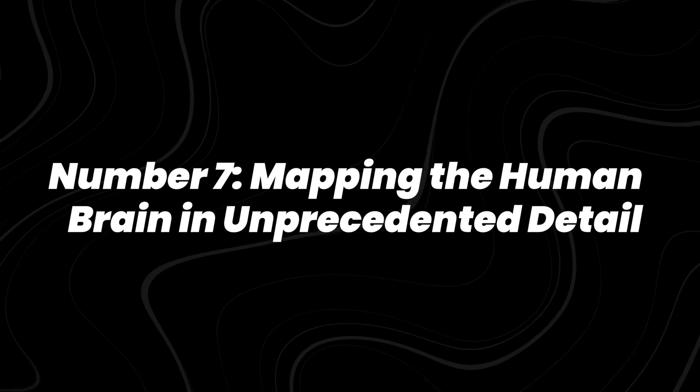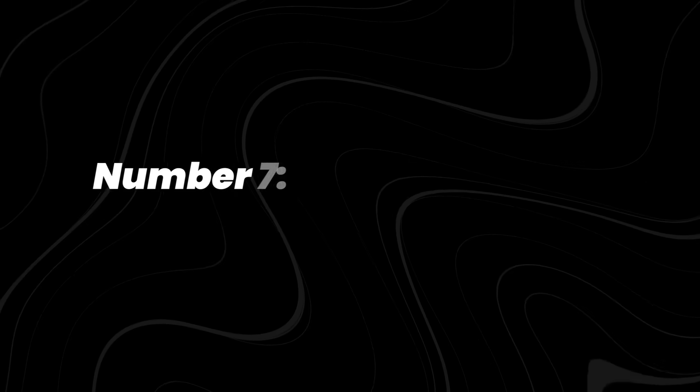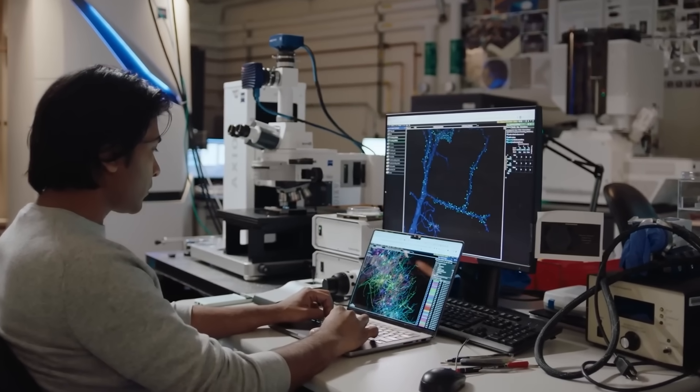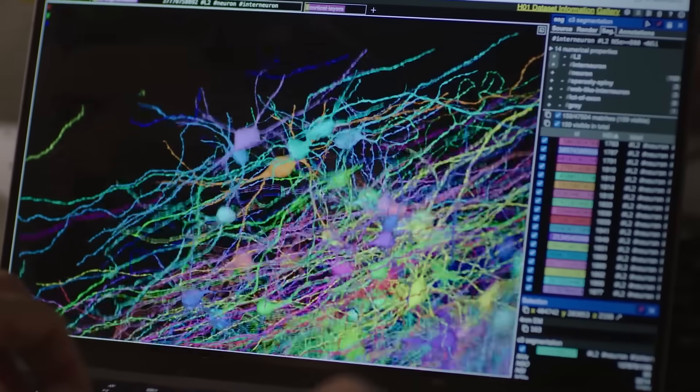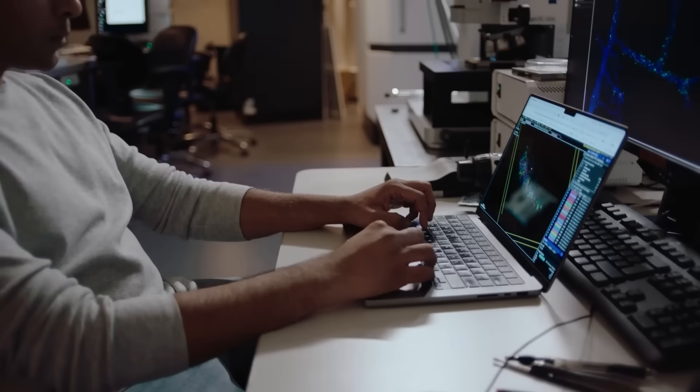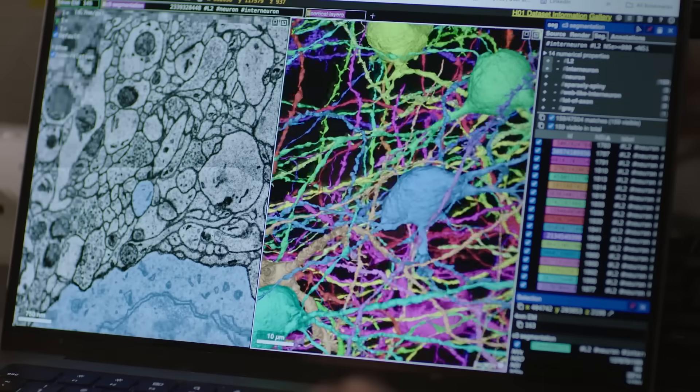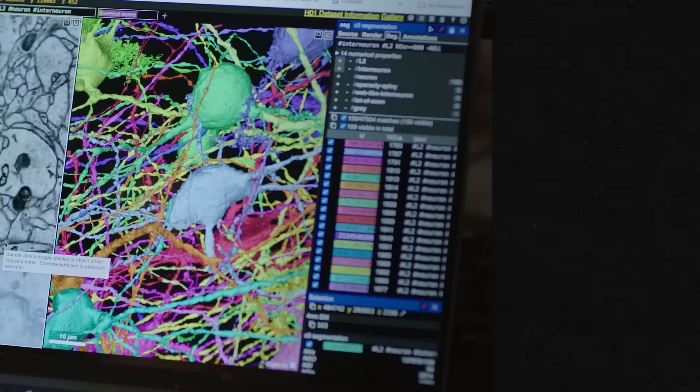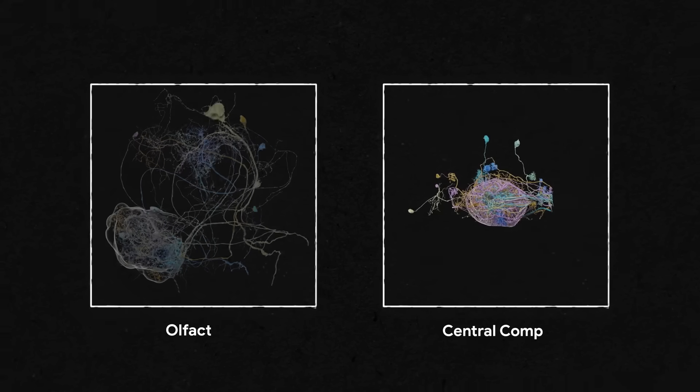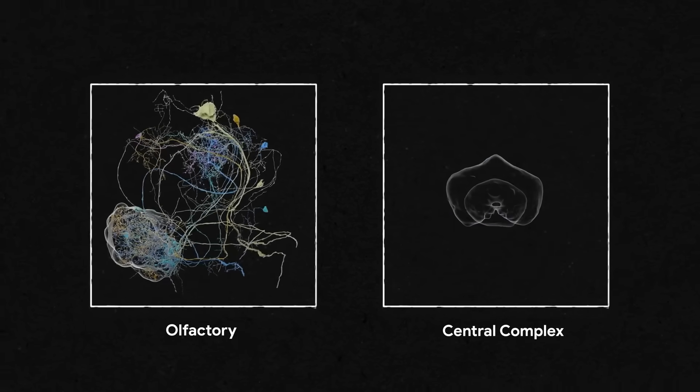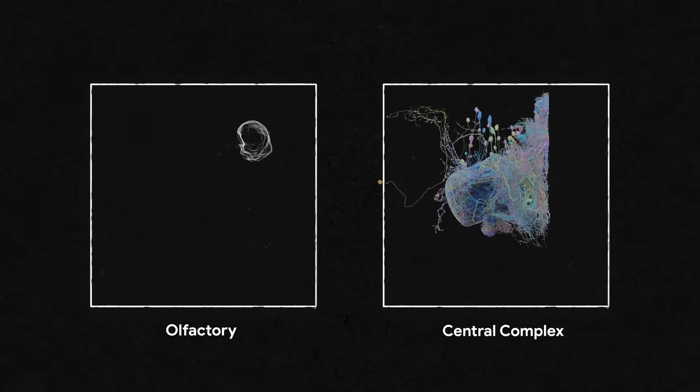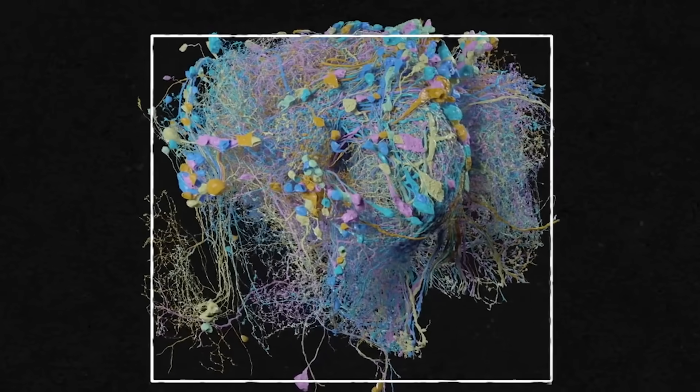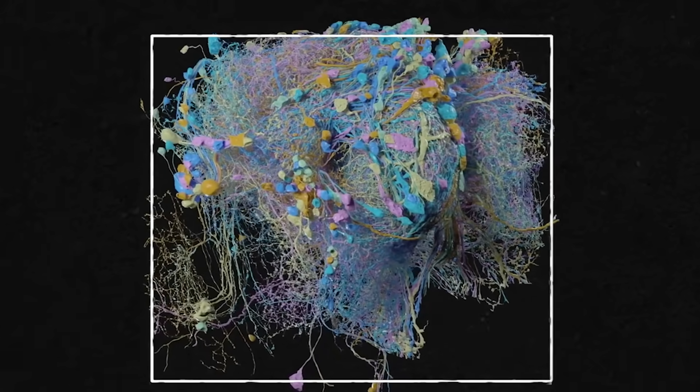Number 7, Mapping the Human Brain in Unprecedented Detail. The human brain contains about 87 billion neurons, but we're only beginning to map its intricate wiring. AI-powered connectomics has allowed researchers to chart brain tissue at nanoscale resolution. In 2023, Google and Harvard released the most detailed 3D reconstruction of human brain tissue ever, covering a cubic millimeter with over 57,000 cells and billions of connections.